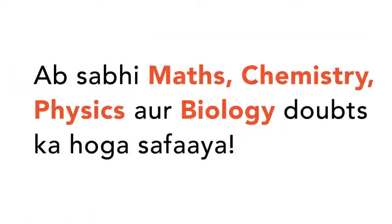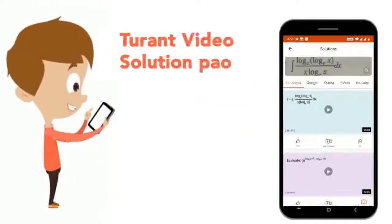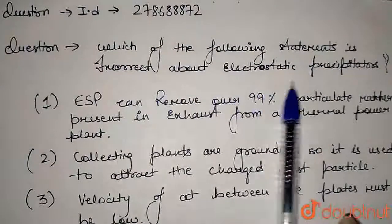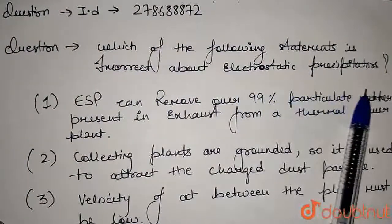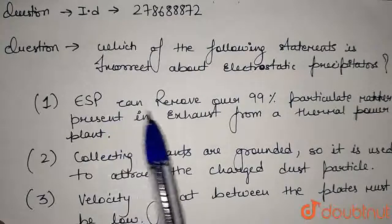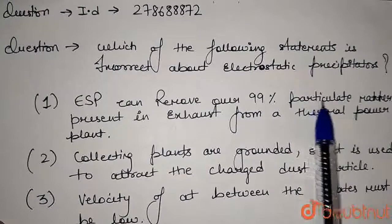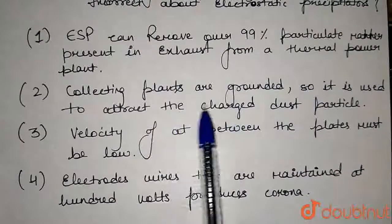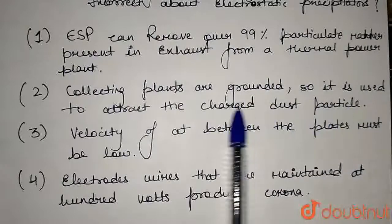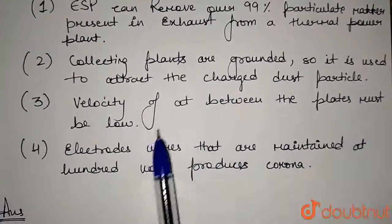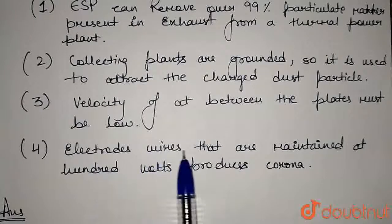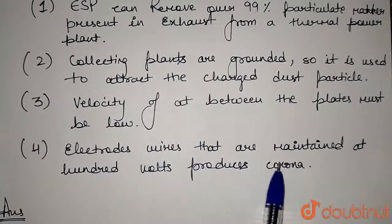The question is: which of the following statements is incorrect about electrostatic precipitators? Option A: electrostatic precipitators can remove over 99% of particulate matter present in exhaust from a thermal power plant. Option B: collecting plates are grounded so they attract charged dust particles. Option C: velocity between the plates must be low. Option D: electrode wires that are maintained at 100V produce corona.